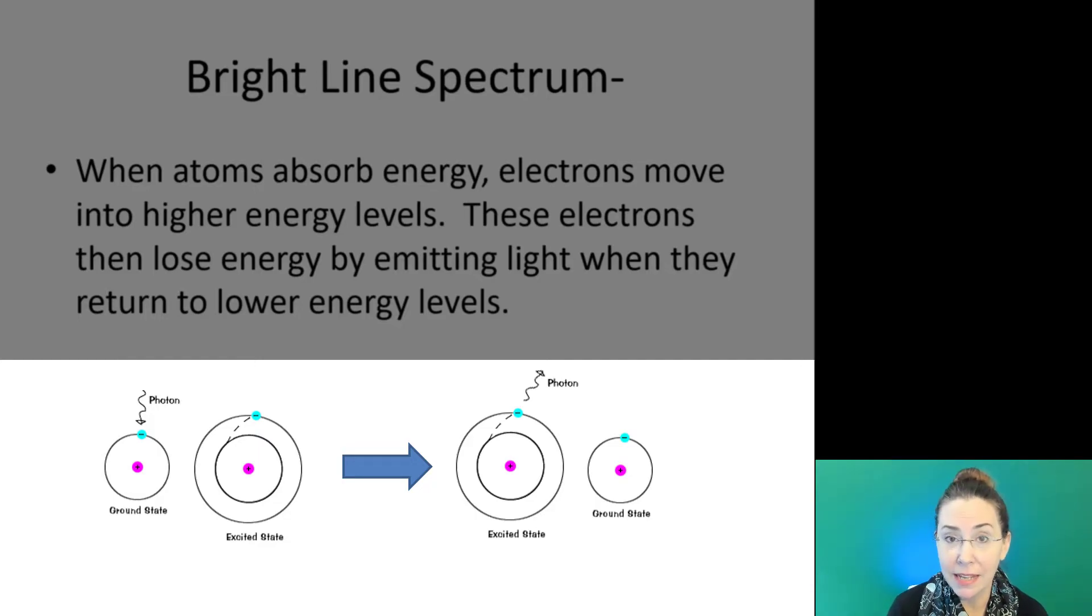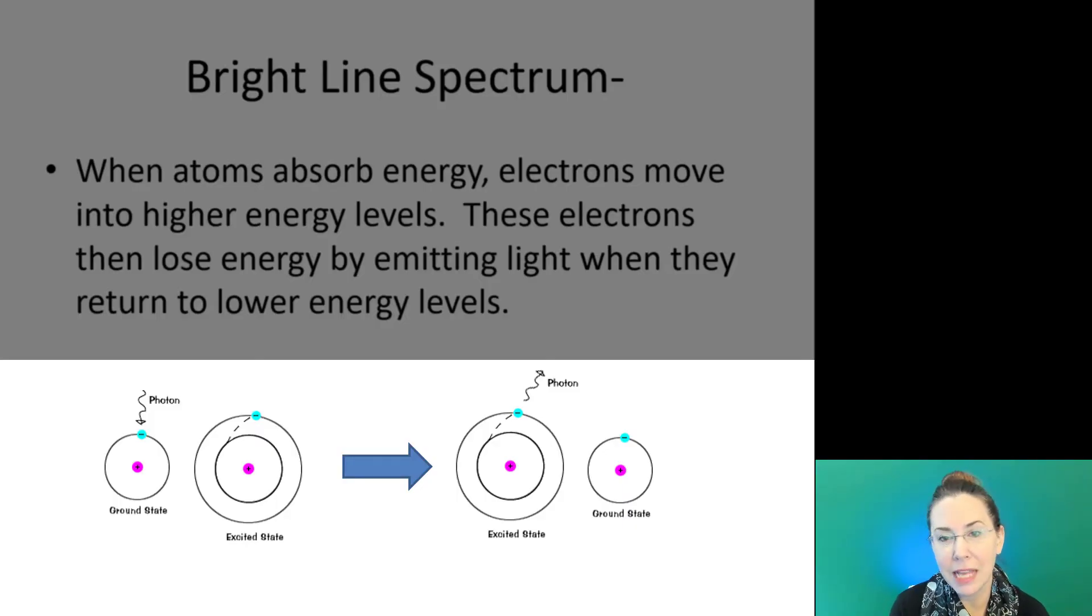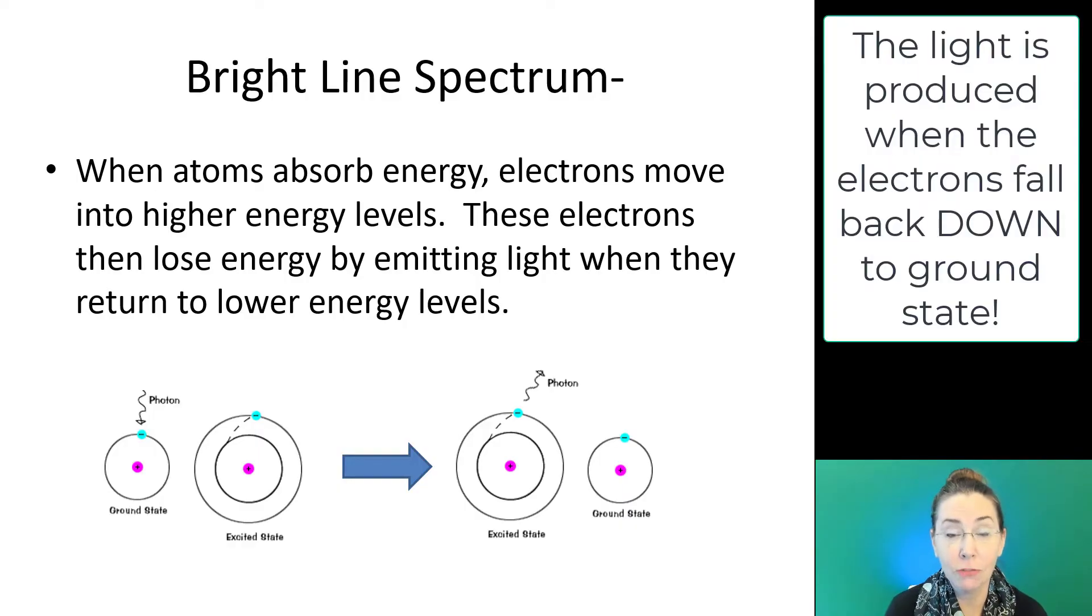Notice that ground state energy level where it originated, the very first orbital closest to the nucleus, is now empty. As that happens, that becomes unstable. The atom is now unstable. The electron cannot maintain this level of energy, and it will release that energy as a photon of light that we can then see when it returns back to its ground state. This is something I'm going to stress over and over. The light is actually produced not on the way up as we absorb energy, but on the way down when we release that energy as light.